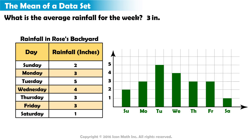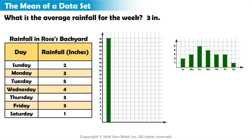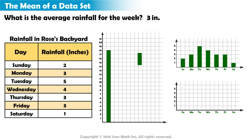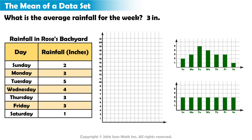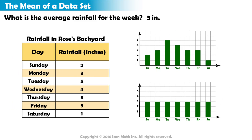Let's make a bar graph of this information. We can visually represent averaging the values by combining each bar and then splitting the result evenly between the 7 days. The result is the average or mean: 3 inches.